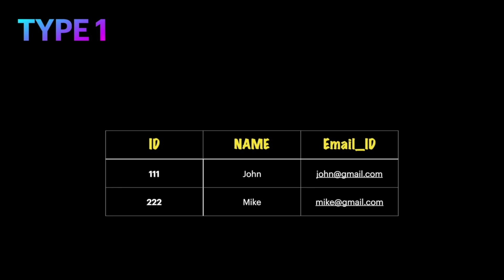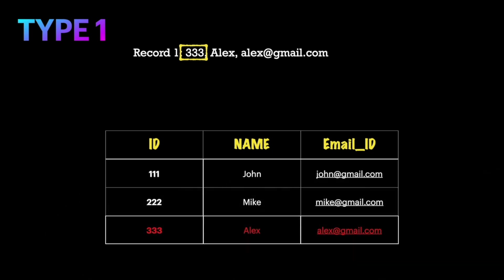Now consider we are getting a new record that needs to be loaded into this table. This record contains values such as 333 for id, Alex for name, and alex@gmail.com for email id. As part of the Type 1 merge, we use a unique column such as id as the merge column. The merge logic first checks if this id already exists in the table. Since id 333 doesn't exist, this is new data, so the Type 1 merge will insert the new row into the table.